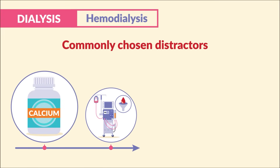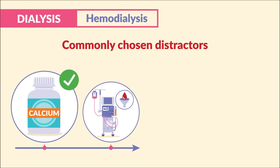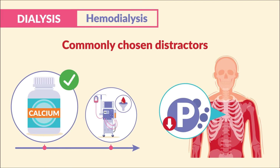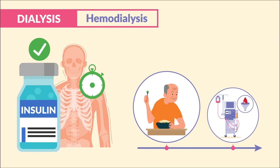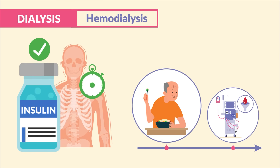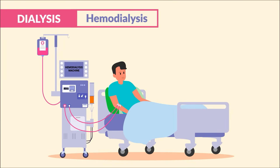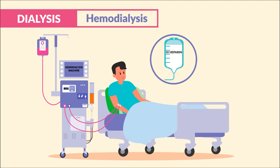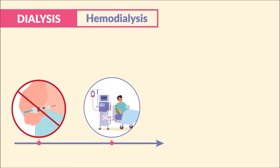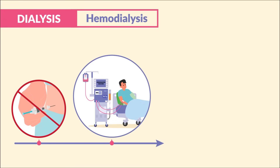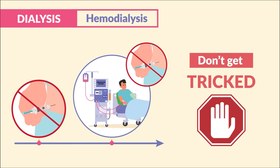Commonly chosen wrong answers include holding calcium supplements — these are okay to give before dialysis to help bring down those phosphorus levels in the blood. Insulin is also okay to give, because it's typically absorbed fast, so we can still give it with breakfast prior to dialysis. During dialysis, IV heparin is added to the blood to prevent clotting, so it's not necessary to give subcutaneous heparin or another blood thinner before or during dialysis.